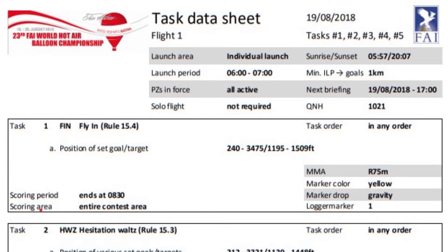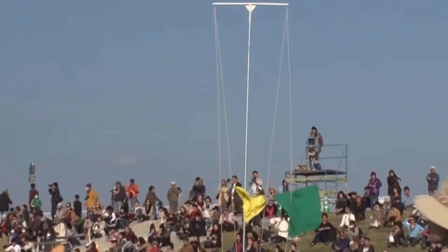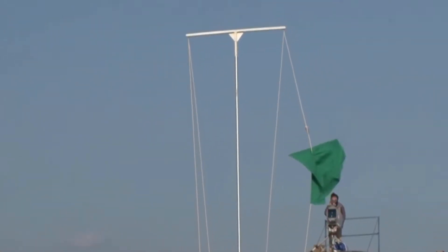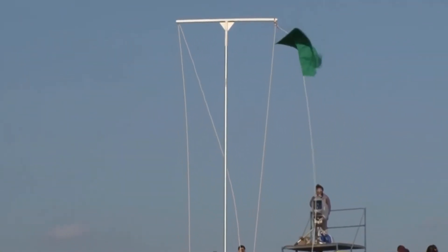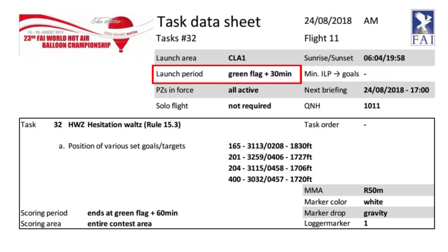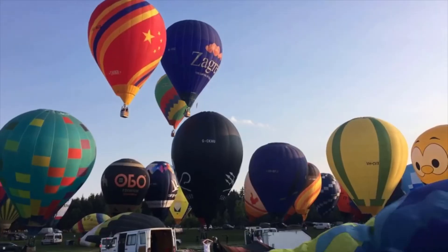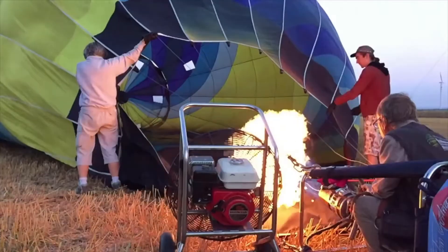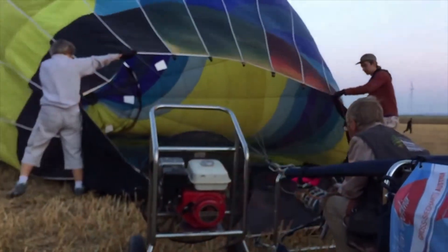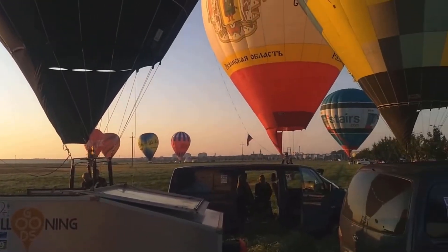Next to be defined is the launch period, which can either be set as a fixed time period in the case of an individual launch. In the case of a common launch, the director will start the launch by raising a green flag at the signals pole, so on the task sheet the launch period will be shown as green flag plus an amount of time — in our first example, 30 minutes. Teams can prepare their balloons on the ground but not start the cold inflation until the green flag. After this, they are free to cold inflate, hot inflate, and launch at their choice during the launch period. For individual launches it is slightly different, and teams can hot inflate before the launch period starts, just not take off.